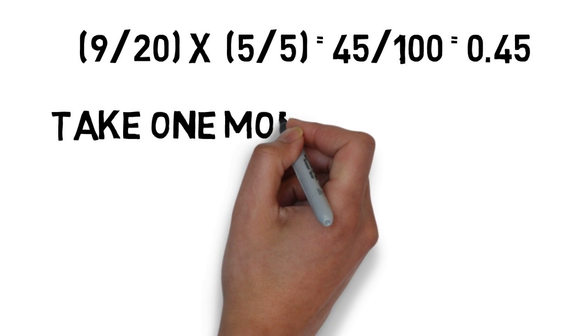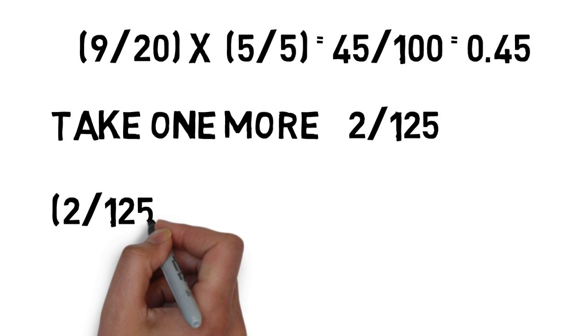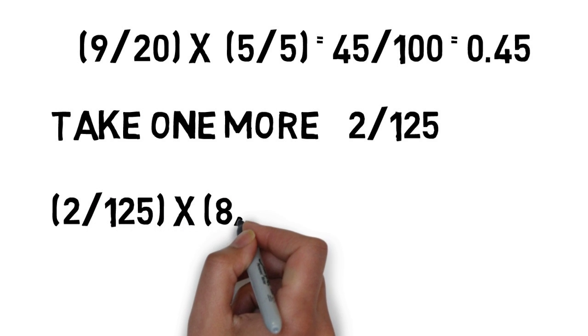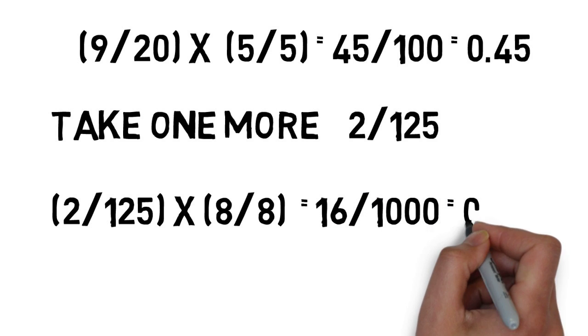Take one more example: 2/125, which becomes (2 × 8)/(125 × 8), which becomes 16/1000, which equals 0.016.